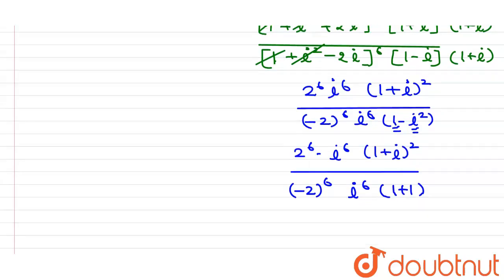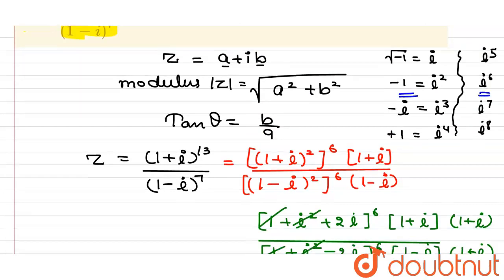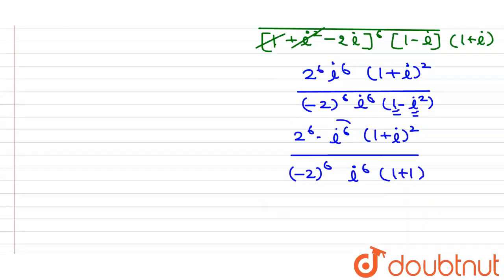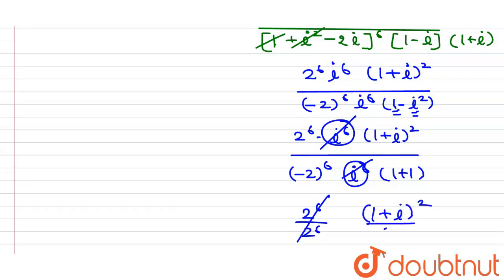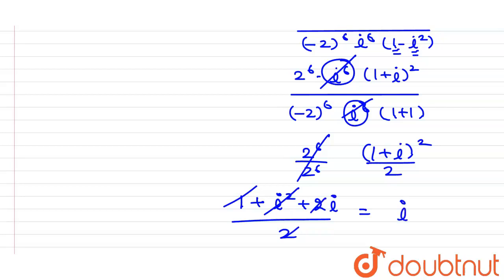Since i^6 = (i⁴)(i²) = 1×(−1) = −1, both numerator and denominator have i^6 = −1, so they cancel. Both 2^6 terms also cancel (even power, both positive). We are left with (1+i)² divided by 2. Expanding (1+i)² = 1 + i² + 2i = 1 − 1 + 2i = 2i. So we get 2i/2 = i.